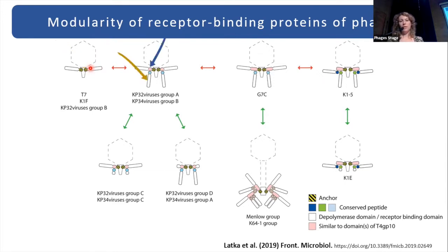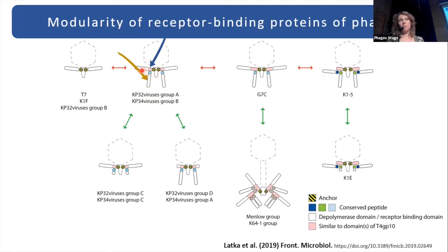What can also happen is that the phage can extend its specificity by gaining an additional RBP, gaining double specificity. Interestingly, the second RBP will not be directly attached to the phage tail, but indirectly through RBP number one, via a so-called branching domain marked with a blue arrow.